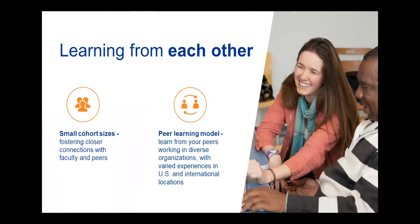We emphasize learning from each other. There are small cohort sizes — if you enter in the summer, which most people do, the cohort is typically about 15 to 20 people. The curriculum is designed so that people working in the field can present their work and incorporate their perspectives into the courses. We have people with vast experience from all over the United States and overseas — roughly 60% of a given cohort is domestic and about 40% is from overseas, primarily developing countries.